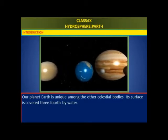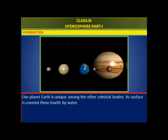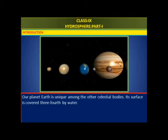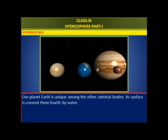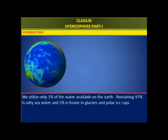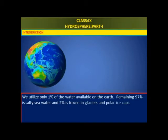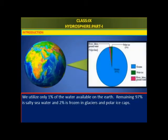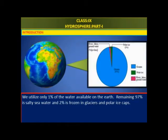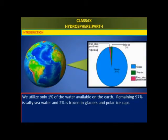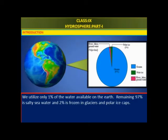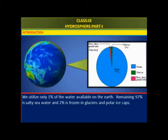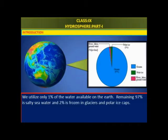Our planet Earth is unique among the other celestial bodies — its surface is covered three-fourths by water. However, we utilize only 1% of the water available on the Earth; the remaining 97% is salty seawater and 2% is frozen in glaciers and polar ice caps.